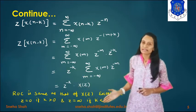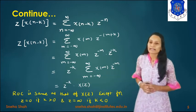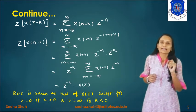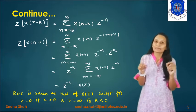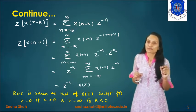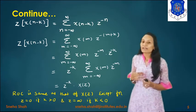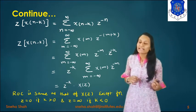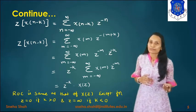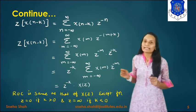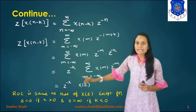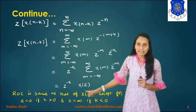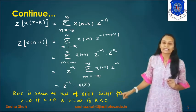For the ROC of the time shifting property: the ROC is the same as that of X(z), with possible exceptions. If k > 0, the term z^(−k) = 1/z^k becomes infinite at z = 0, so z = 0 is excluded. If k < 0, the term z^k becomes infinite at z = ∞, so z = ∞ is excluded. Therefore, the ROC is the same as X(z) except z = 0 when k > 0 and z = ∞ when k < 0.